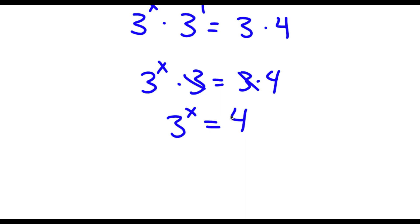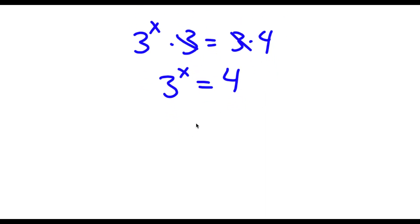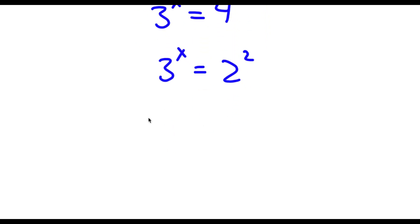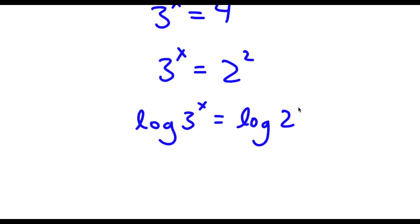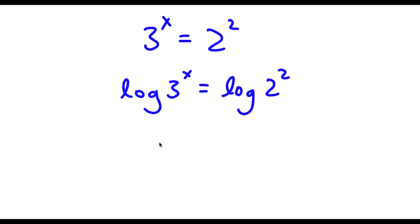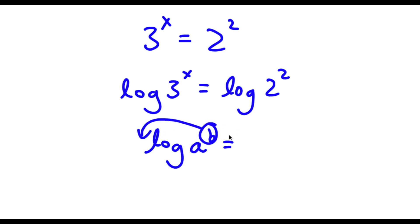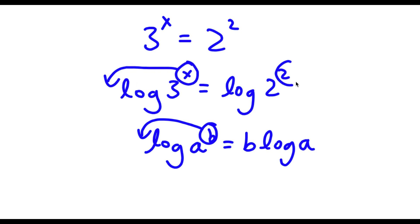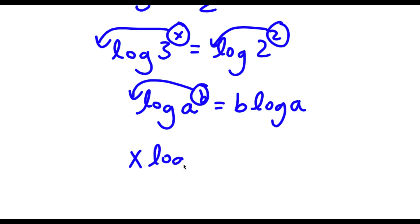Now this 4 is the same thing as 2 to the power of 2. So I have 3^x = 2^2. To solve this, I'm going to take the log on both sides. So I have log(3^x) = log(2^2). Using the log power rule — log(a^b) = b·log(a) — I can move the exponents to the front. So now I have x times log 3 is equal to 2 times log 2.